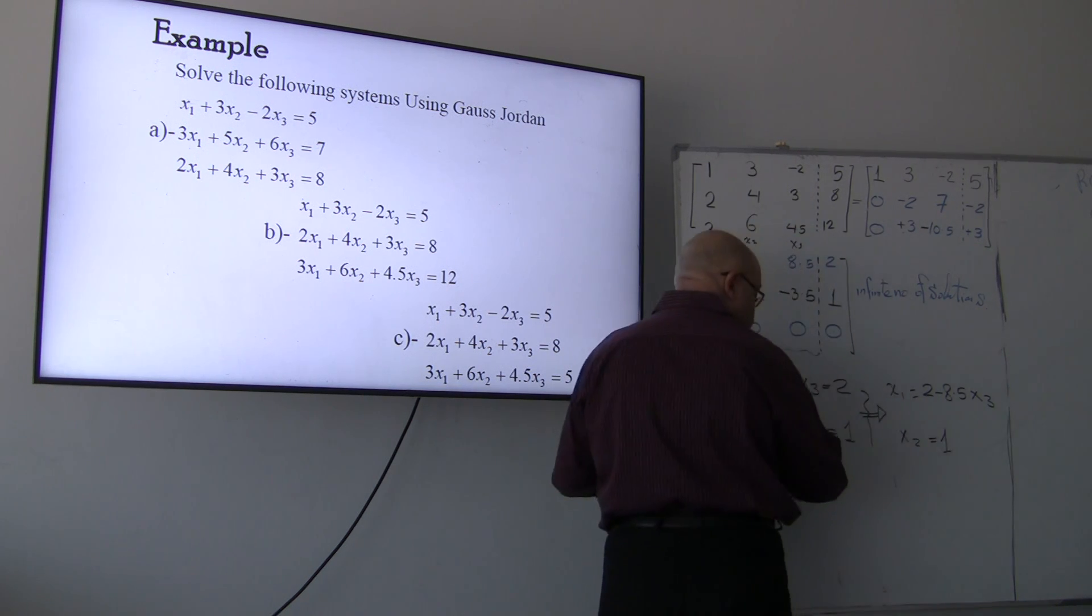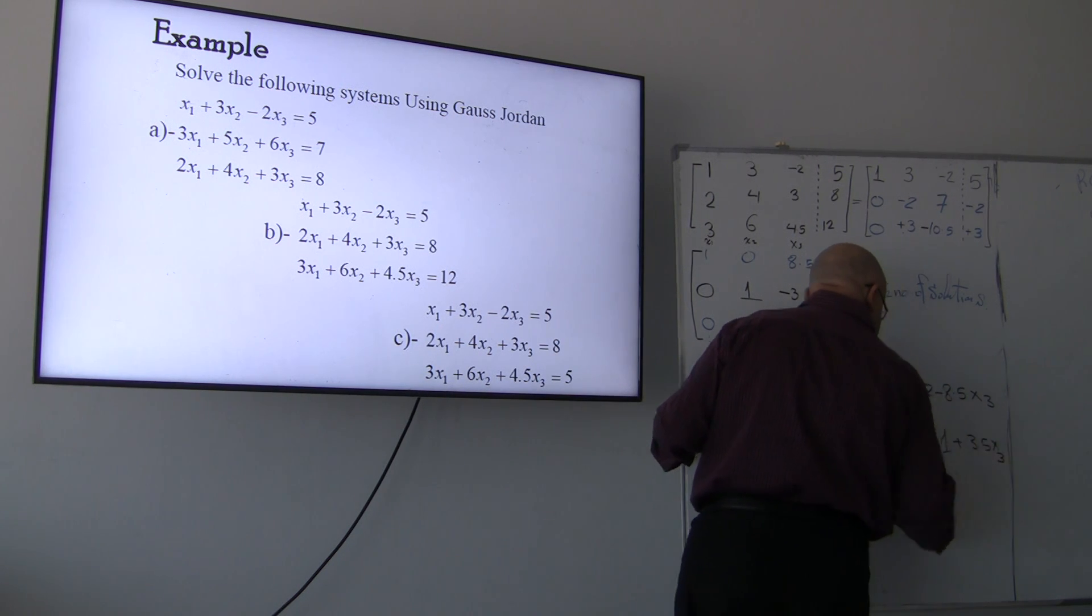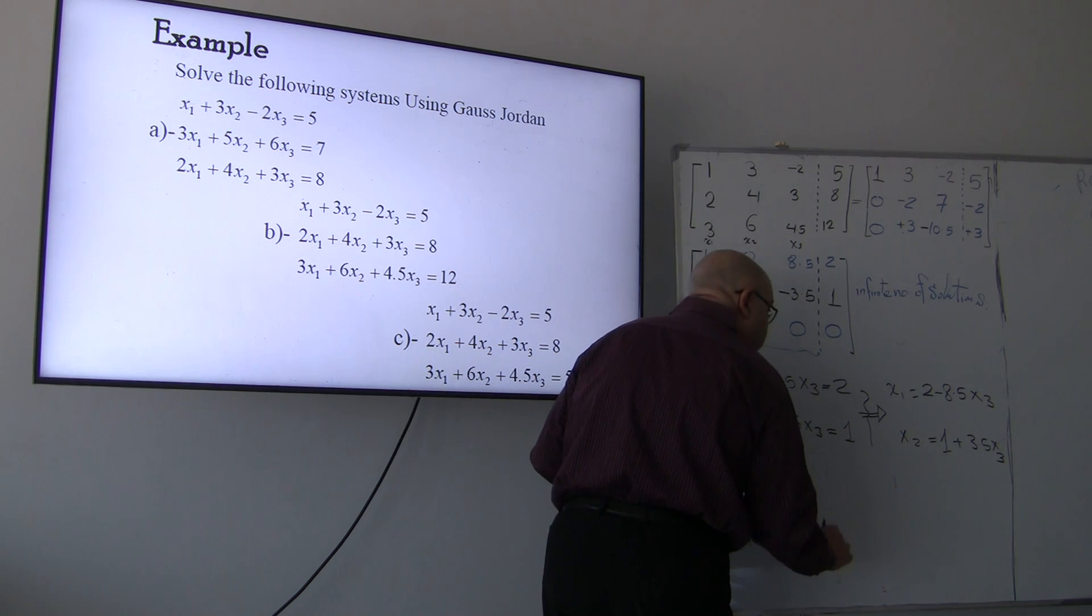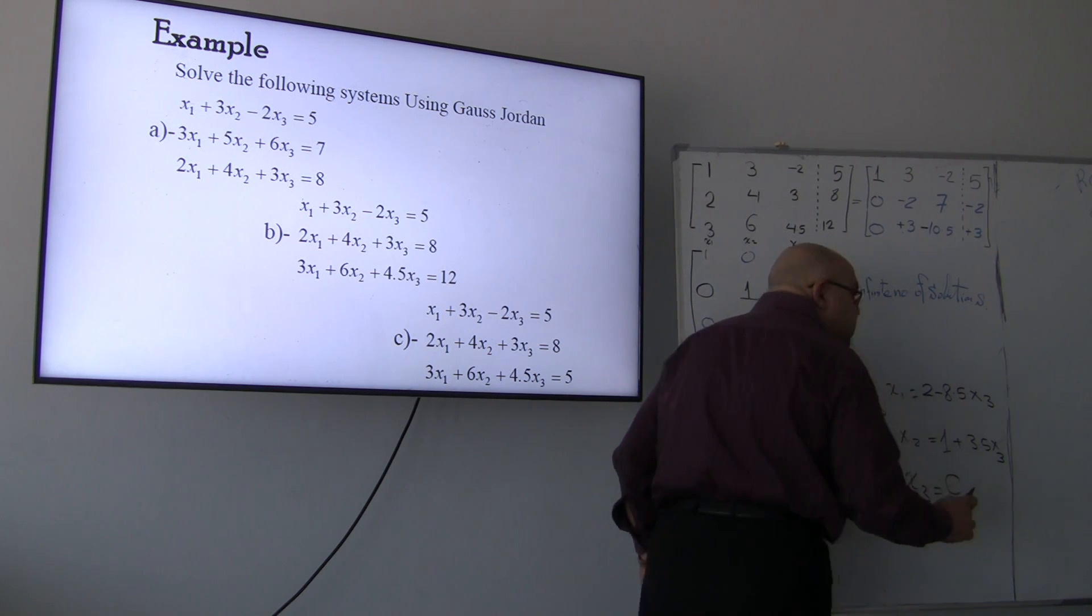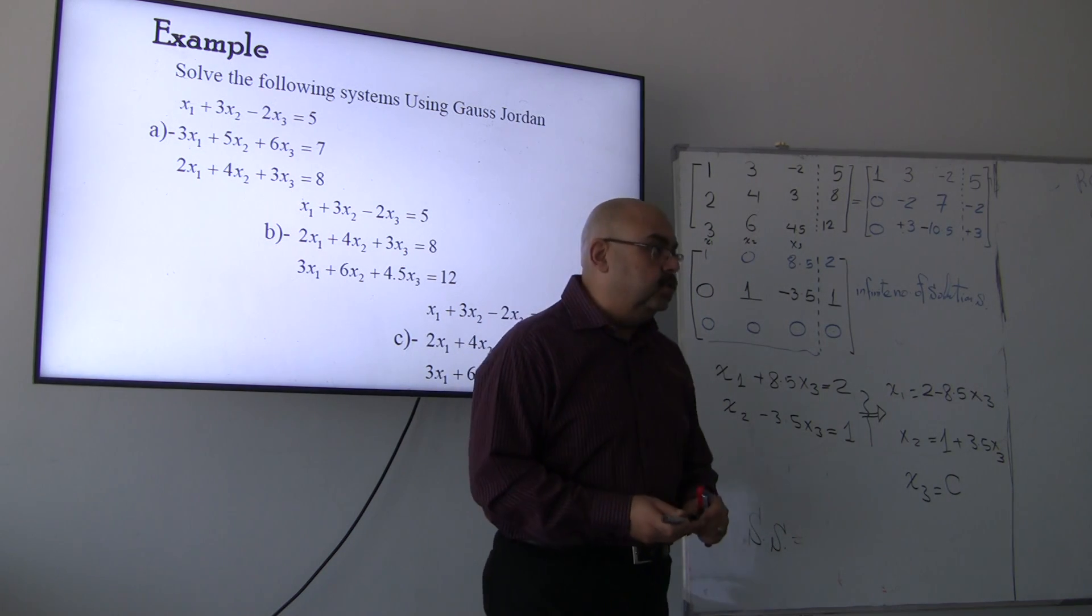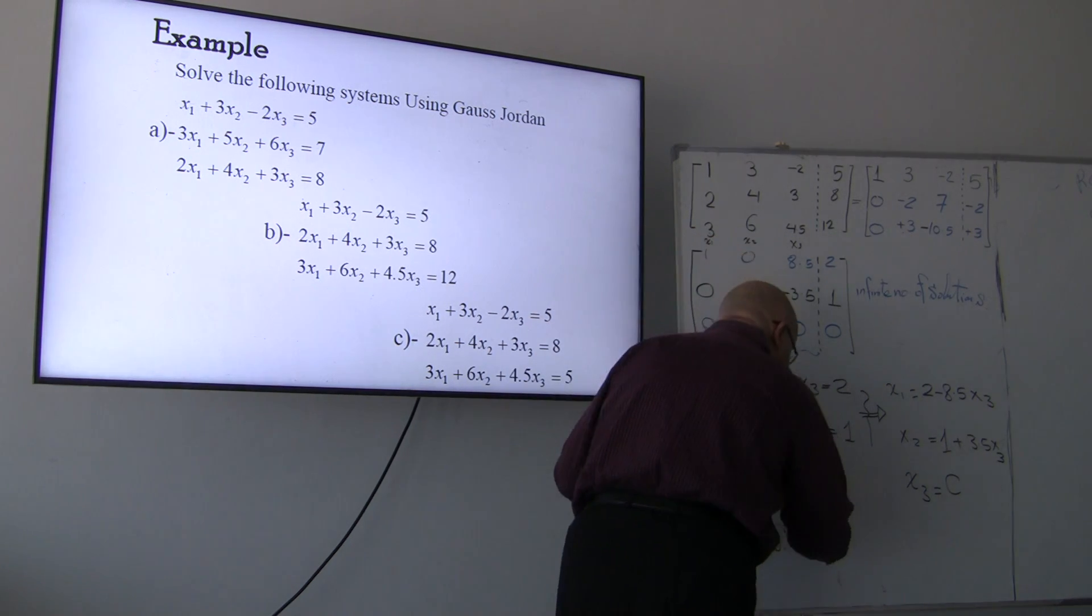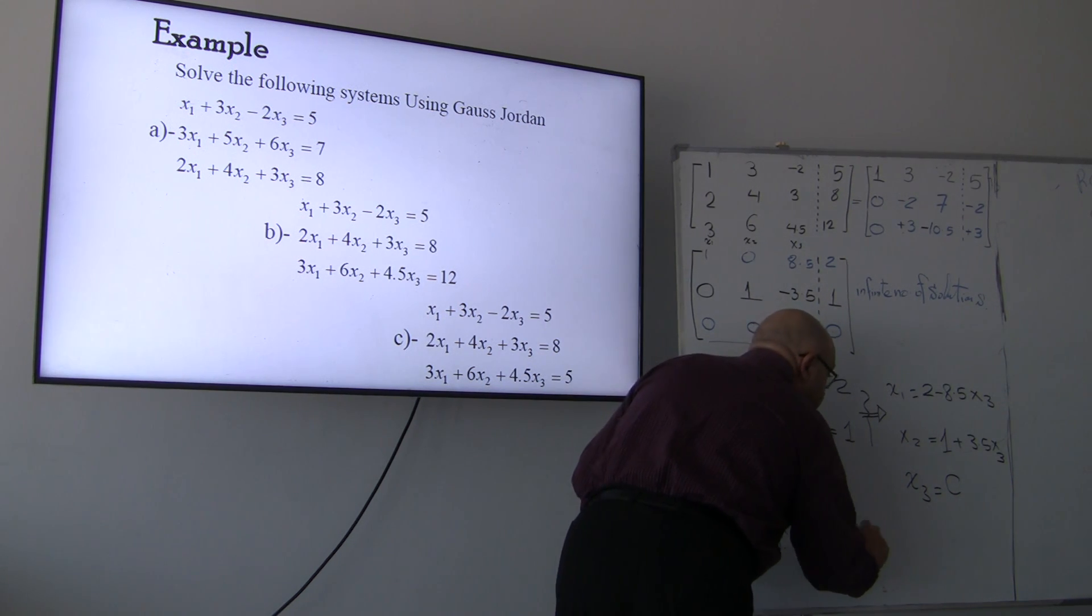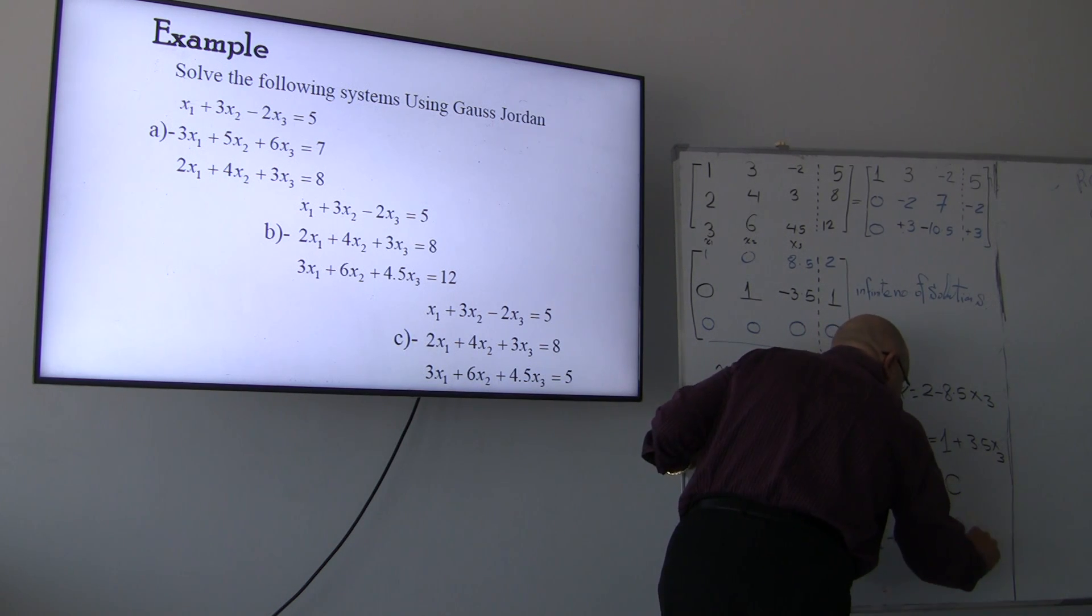Will equal to positive 1, just move it to the other side, so it's going to be plus 3.5 x2. Let's get to the solution set of this system of equations. I will get to x3 and I will call it a c. c is an arbitrary constant, which is any number you can take. So the solution set will be simply 2 minus 8.5c, and for x2 is going to be 1 plus 3.5c and for x3 it's c.